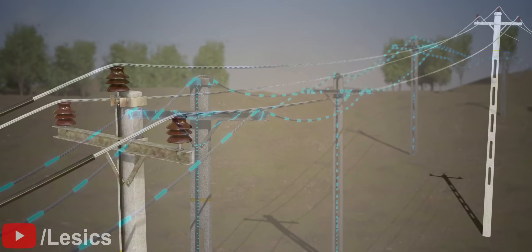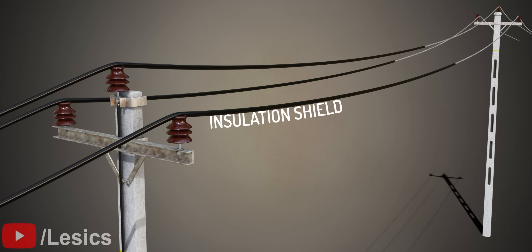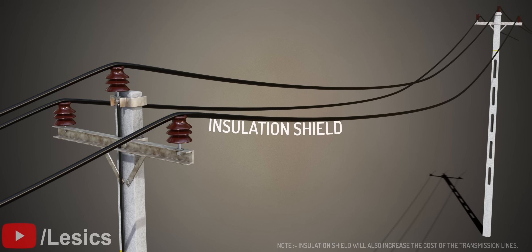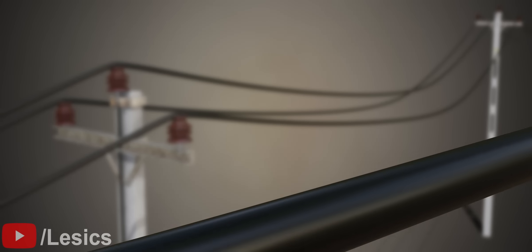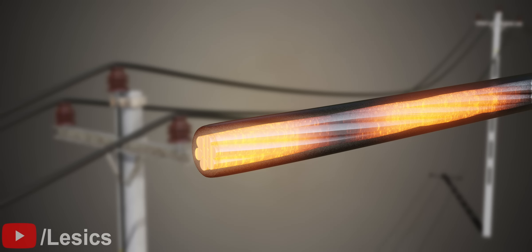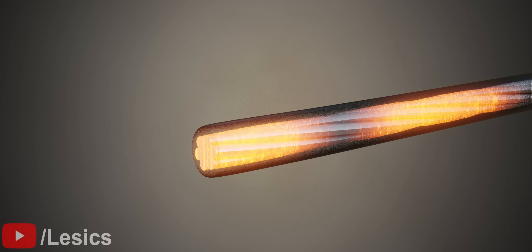Transmission wires don't have an insulation shield, because providing insulation to the entire length would unnecessarily increase their weight. Moreover, it also decreases the rate of heat transfer from the conductor to the atmosphere. The heat generated by the conductor is trapped between the insulator and the conductor, which could damage the wire.